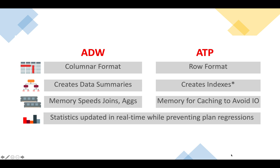Next is query optimization. Queries executed on ADW are automatically parallelized, as they tend to access large volumes of data — Oracle understands that a data warehouse needs parallelism. In ATP, indexes are used to access only the specific rows of interest. With Oracle Database 19c, if you are running an autonomous database on 19c, it will automatically create indexes as well. So remember: ADW uses parallelism for data summaries, while ATP uses indexes, and with 19c you also get automatic index creation.